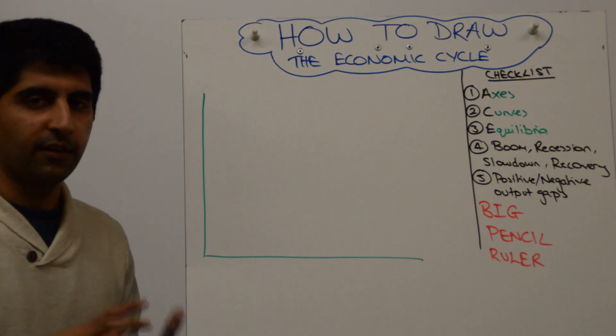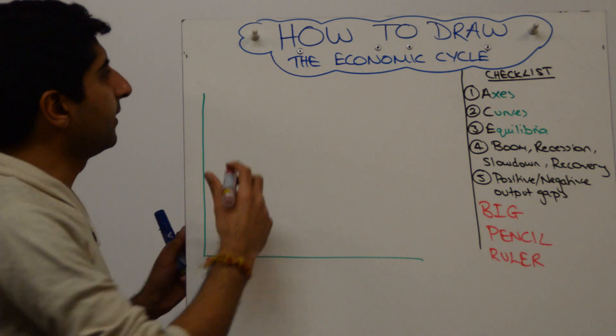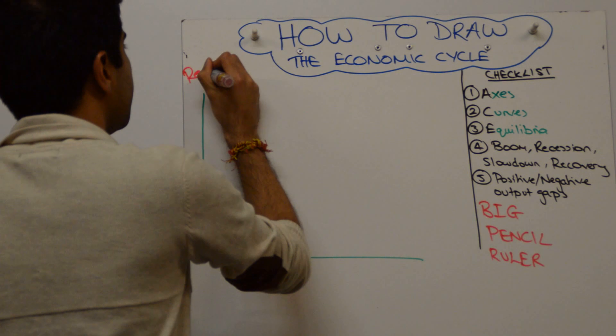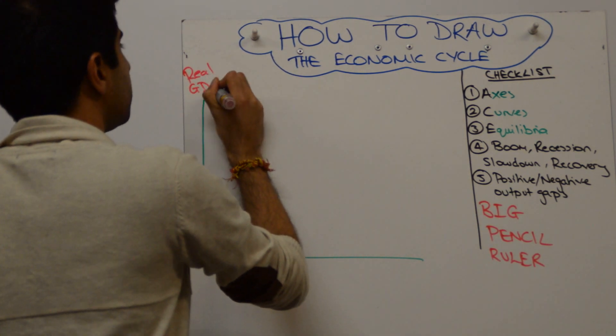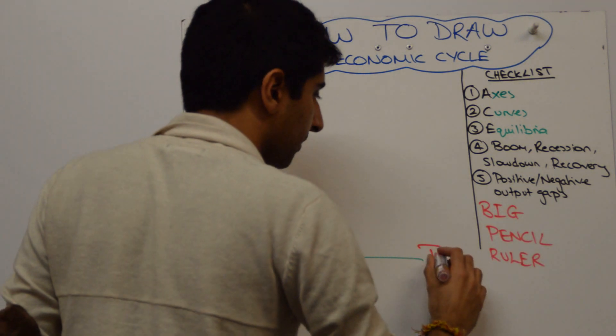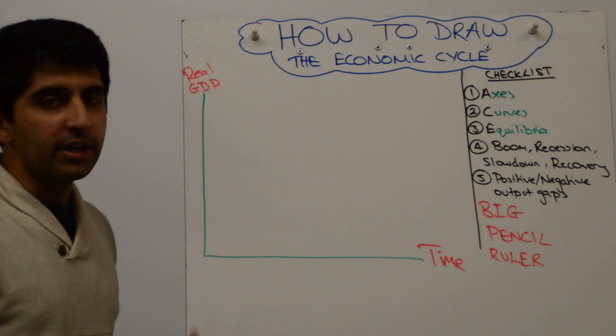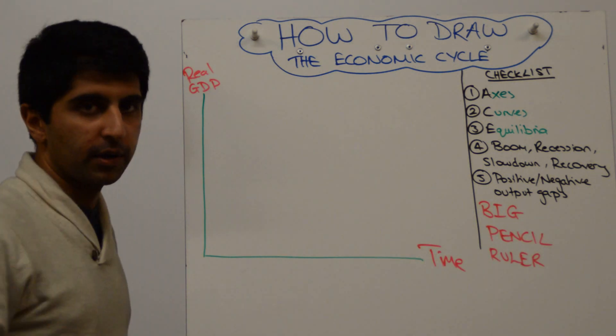Let's construct this. First key thing to get right is labeling the axis. On the y-axis we have real GDP. Make sure you label it as such. On the x-axis we have time. So we're looking at the rate of growth of the economy over a period of time.